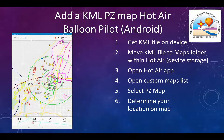Map behavior with respect to position is controlled by the second from the right icon in that set of five icons.